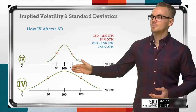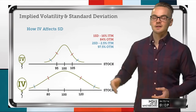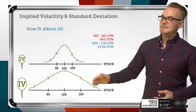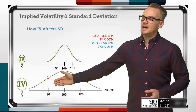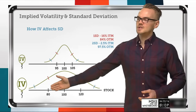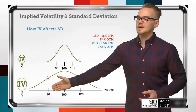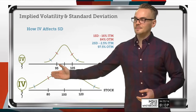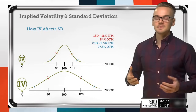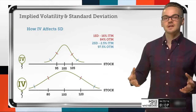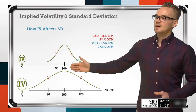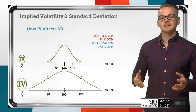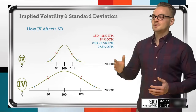And on the downside, I might be able to capture that 84% chance of being out of the money by selling a put at the $80 strike, which gives me that one standard deviation range — compared to the $95 strike in a low volatility environment.